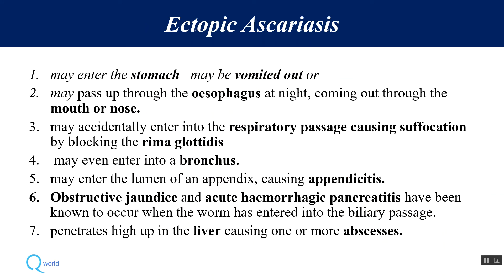In very heavy infections, worms from the small intestine may migrate to the stomach or be vomited out through the esophagus, mouth, or nose, or enter the respiratory passage and cause suffocation. They may also enter the bronchus, or from the small intestine enter the cecum and appendix causing appendicitis, or enter the bile duct causing obstructive jaundice, or reach the liver causing liver abscesses — so there are many ectopic sites affected by adult worms.